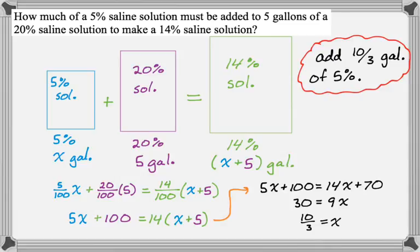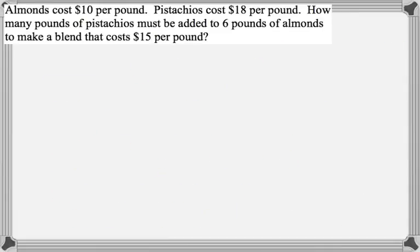Let's take a look at another one, which is almost the same question but kind of feels different because it's a different context. Almonds cost $10 per pound, pistachios cost $18 per pound. How many pounds of pistachios must be added to 6 pounds of almonds to make a blend that costs $15 per pound? It's basically the same question, so I'm going to start in exactly the same way. I'm going to draw a picture.